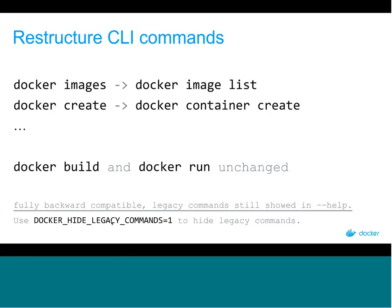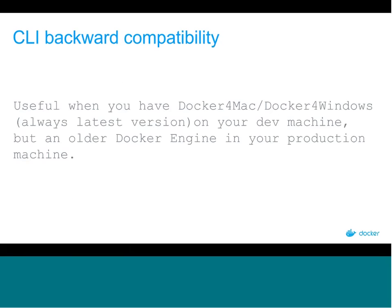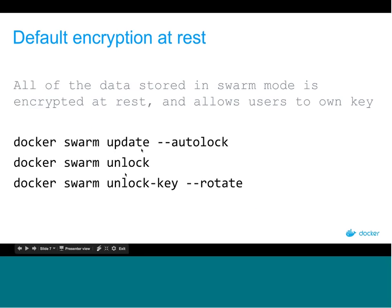Question two — please address security. Everything is encrypted at rest — that was already the case in 1.12 with no change there. We just added a way for you to have more control and allow users to use their own key to unlock the cluster. Question three — are plugins only installed locally, or can they be installed across the whole swarm? So far in 1.13, it's only local. It will probably evolve in 1.14 or 1.15 — we're going to install plugins through Swarm — but for now you have to go to every machine yourself and install manually.